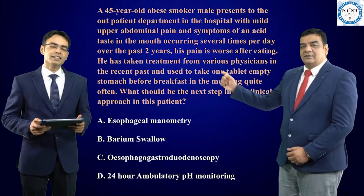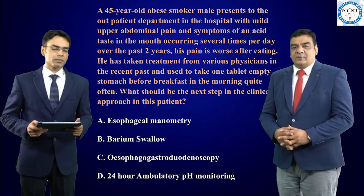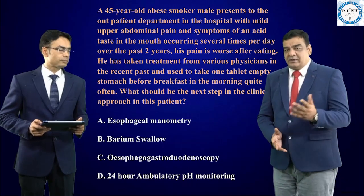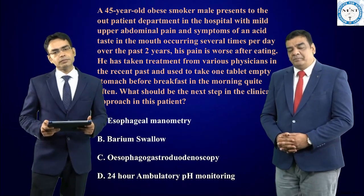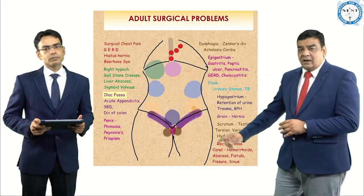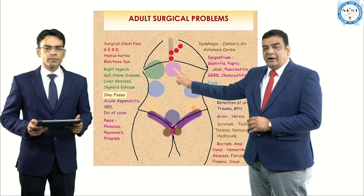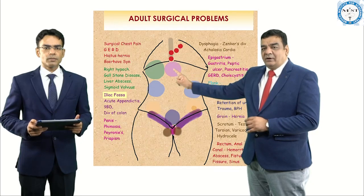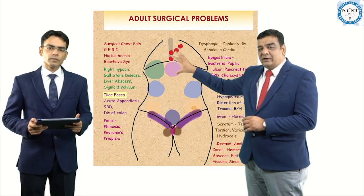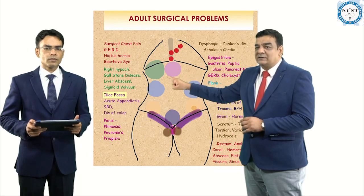I personally feel that in this particular case, the patient is clearly having upper abdominal pain with acid coming into his mouth and has already taken treatment from local physicians. Most likely he would have taken PPIs, as clearly suggested by one tablet empty stomach in the morning before breakfast. This upper abdominal pain can be related to pathologies in the epigastric area like gastritis, gastric ulcer, or duodenal ulcer, or it may be related to acid reflux coming up into the esophagus as in cases of GERD. I would definitely like to know where the pathology is — whether in the lower esophagus, stomach, or duodenum.